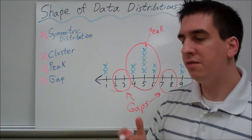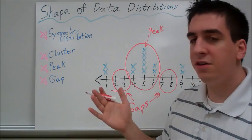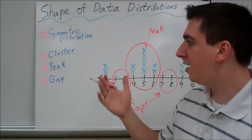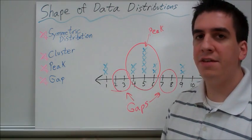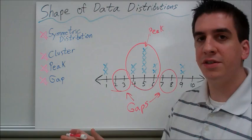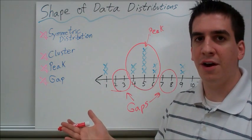When you're filling out your note sheet, please note on there that sometimes you may not have a gap, sometimes you may not have a cluster, maybe it's distributed evenly. Sometimes you may not even have symmetric distribution. So if those don't exist, just say that they don't exist on that certain graph.